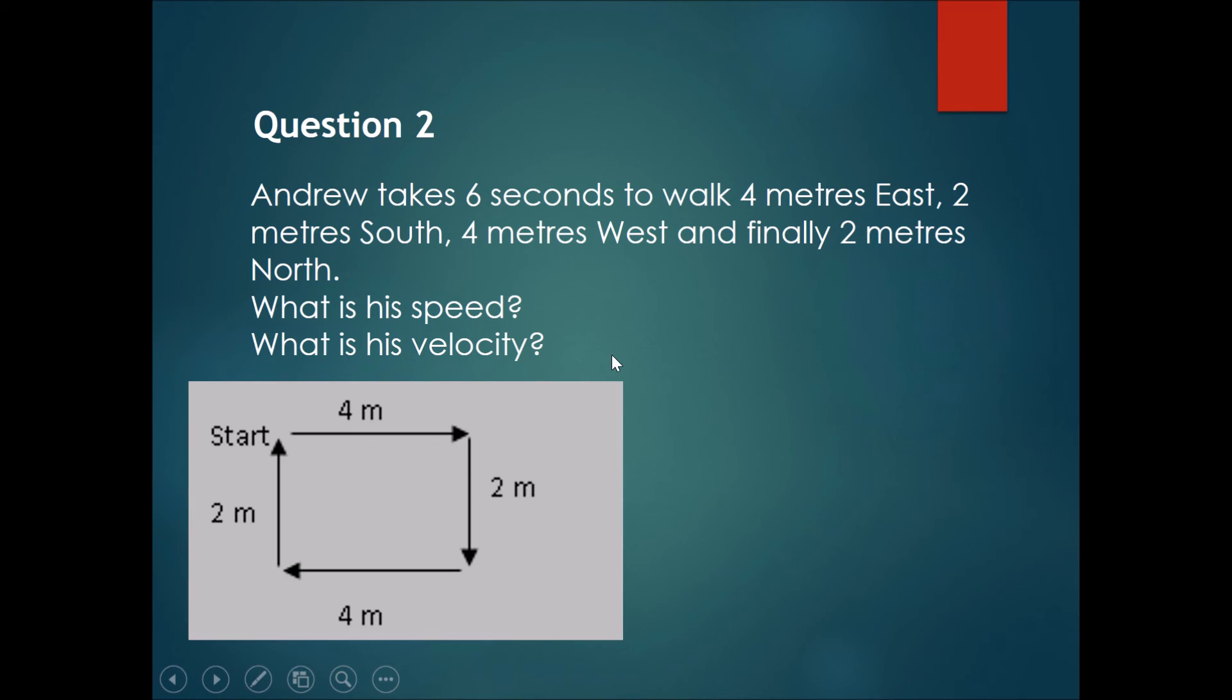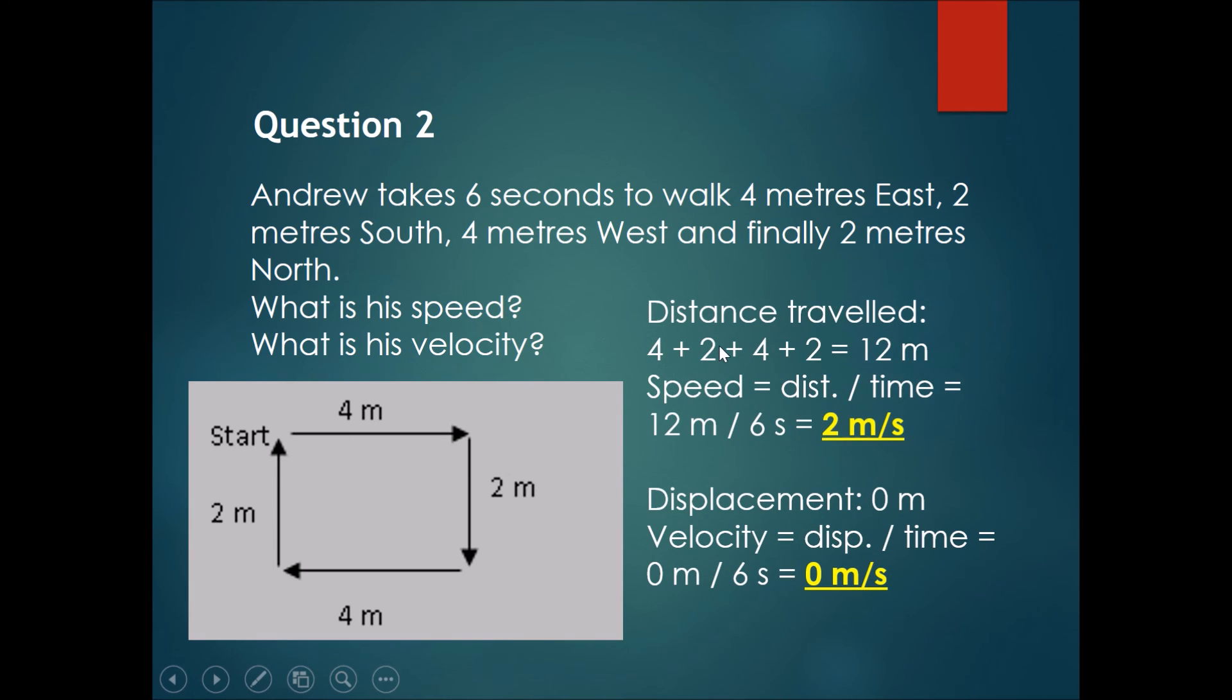Okay, let's go through the answers. So his distance traveled will be 4 plus 2 plus 4 plus 2 meters, which will end up with 12 meters, so his speed will be distance divided by time, which will be 12 meters divided by 6 seconds—that will get you 2 meters per second.